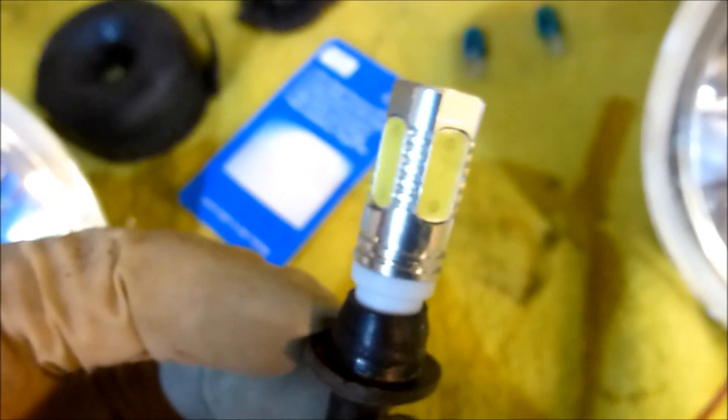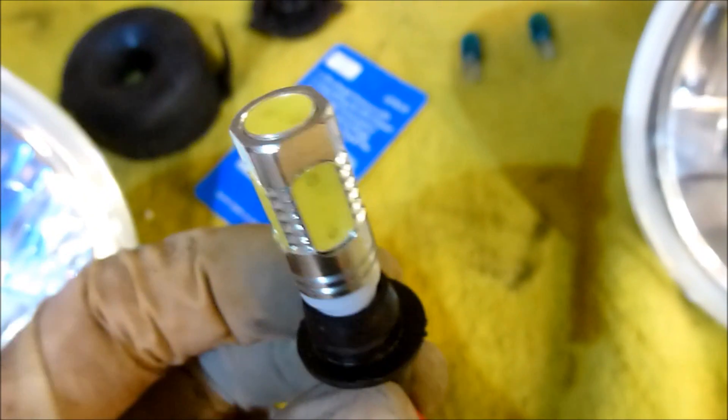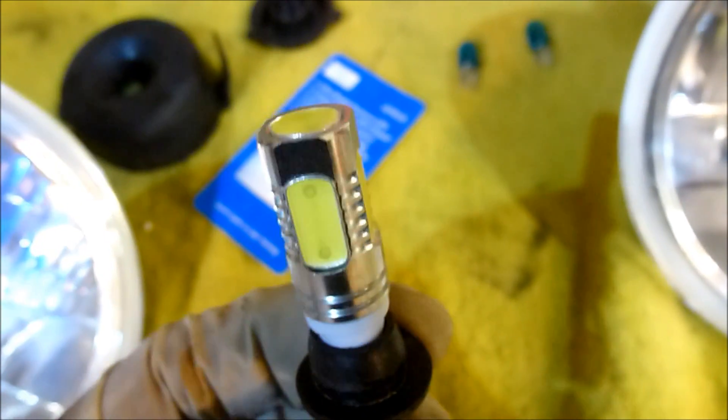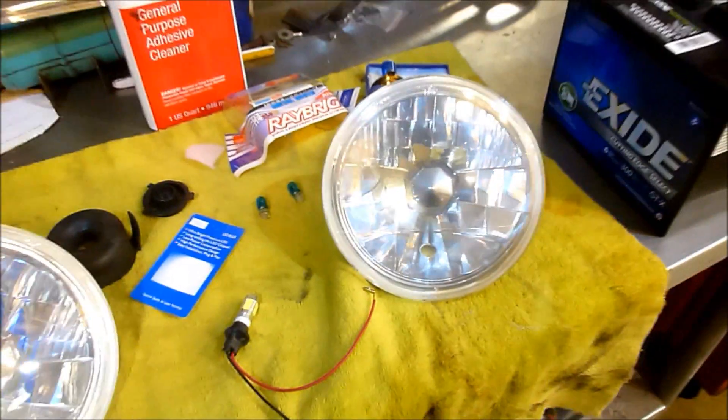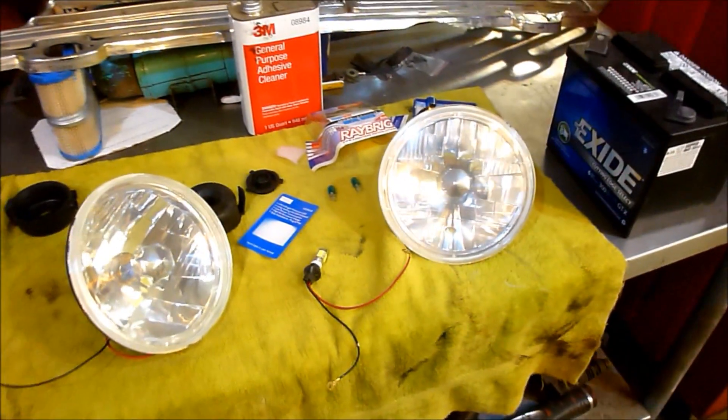So you might see a Honda 600 running around with some bright LED headlights—some seven-inch round sealed beams that have been converted. There we go. That's our tip and trick for tonight. Thanks for watching.